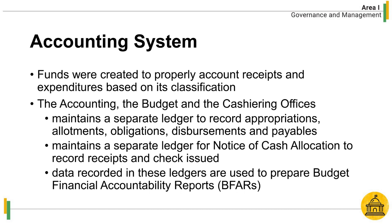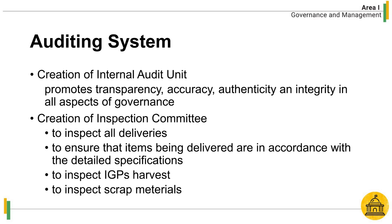The accounting, budget, and cashiering offices maintain separate ledgers to record appropriations, allotments, obligations, disbursements, and payables, as well as a separate ledger for notice of cash allocation. The data recorded in these ledgers are used to prepare budget financial accountability reports, or BFARs. PSAU promotes transparency, accuracy, authenticity, and integrity in all aspects of governance, and has composed an internal audit service unit through Office Order DA No. 067, Series of 2017. PSAU likewise created an inspection committee to inspect all deliveries of supplies, goods, and equipment, ensuring items delivered are in accordance with detailed specifications on the approved purchase request, in consultation with end-users and the technical working group of the Bids and Awards Committee.